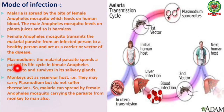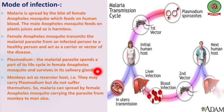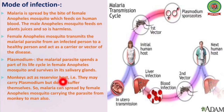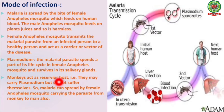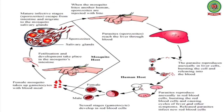Plasmodium, the malarial parasite, spends a part of its life cycle in the female Anopheles mosquito, specifically in its salivary glands. The primary host is the female Anopheles mosquito. Monkeys act as a reservoir host — they may carry Plasmodium but do not suffer themselves. Therefore, malaria can also spread by a female Anopheles mosquito carrying the parasite from monkey to man.